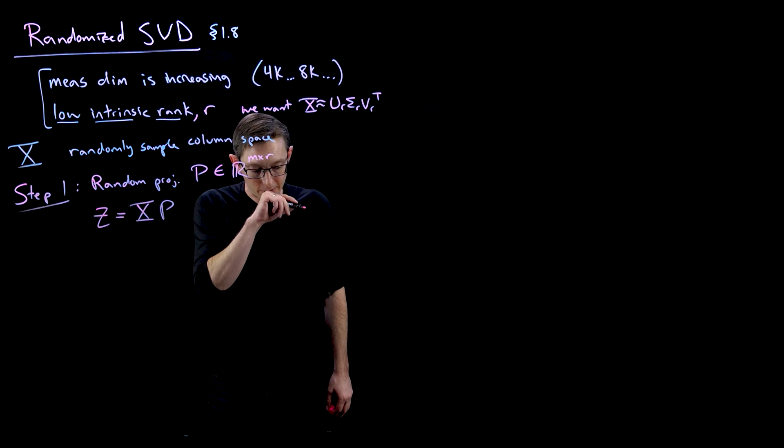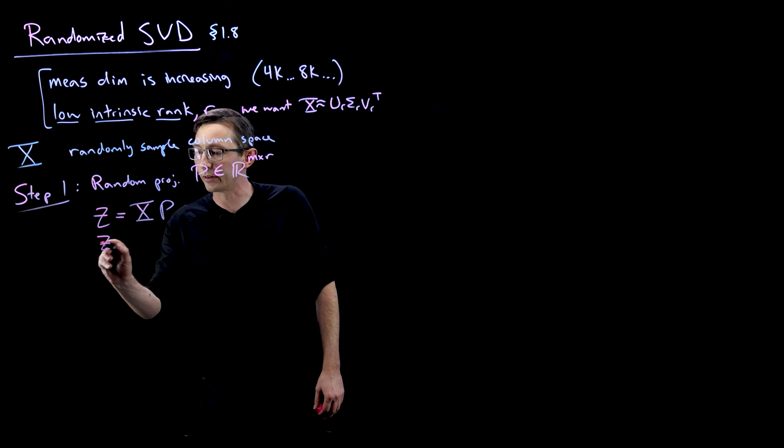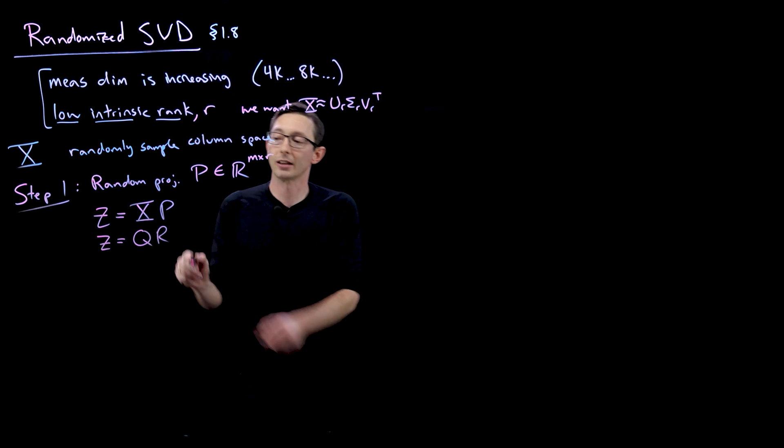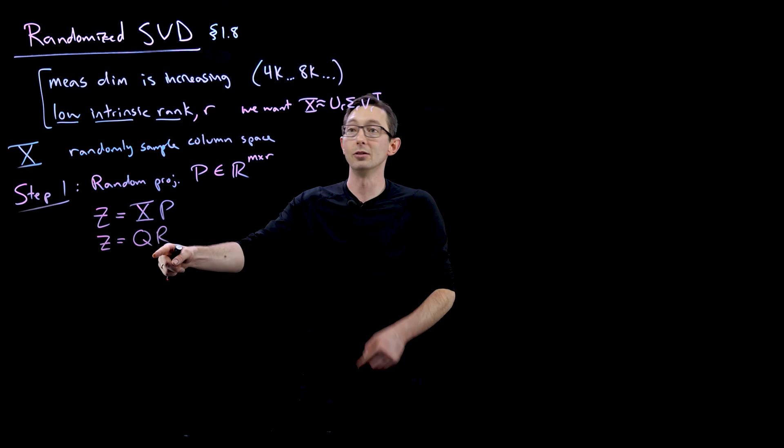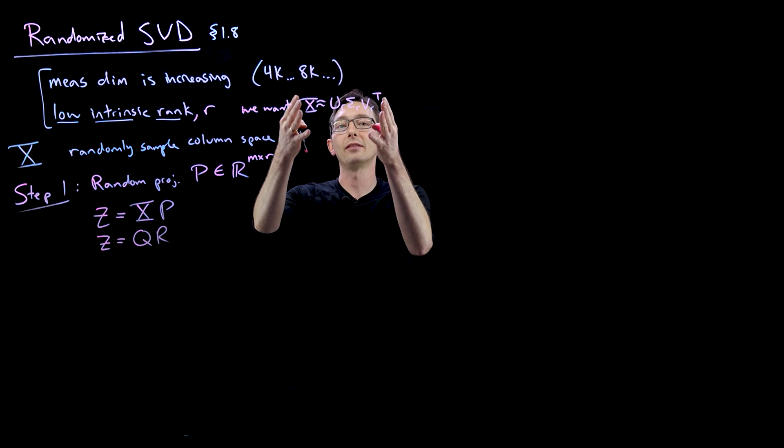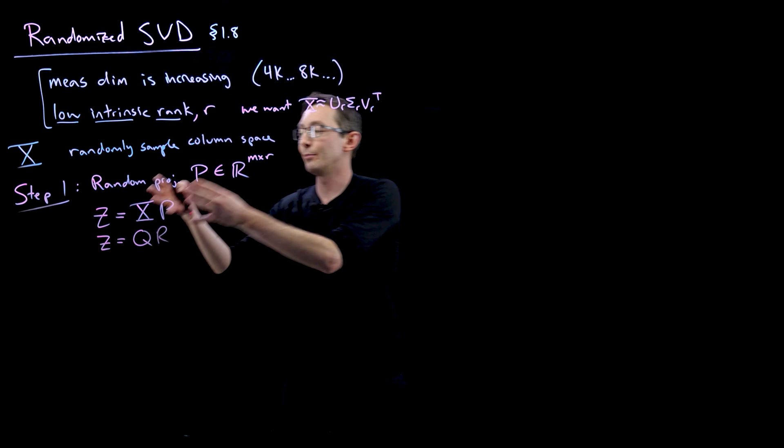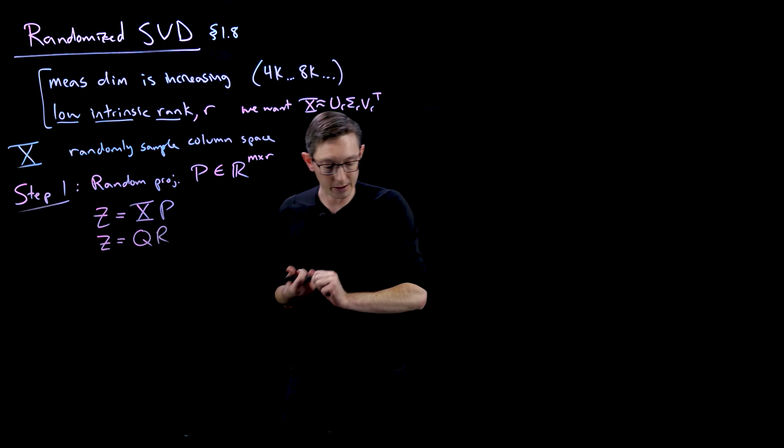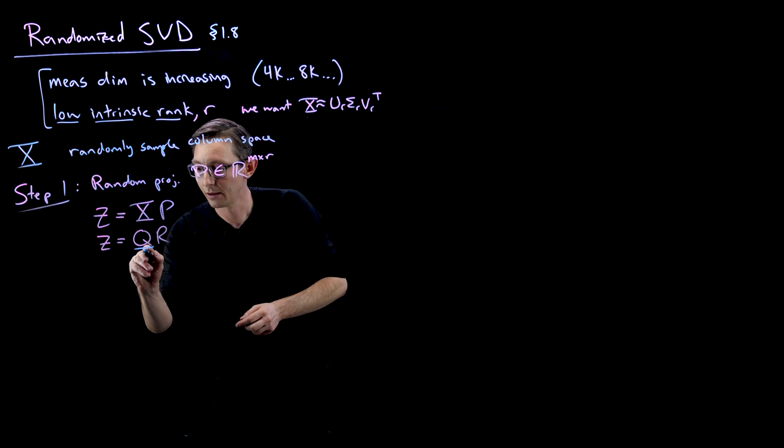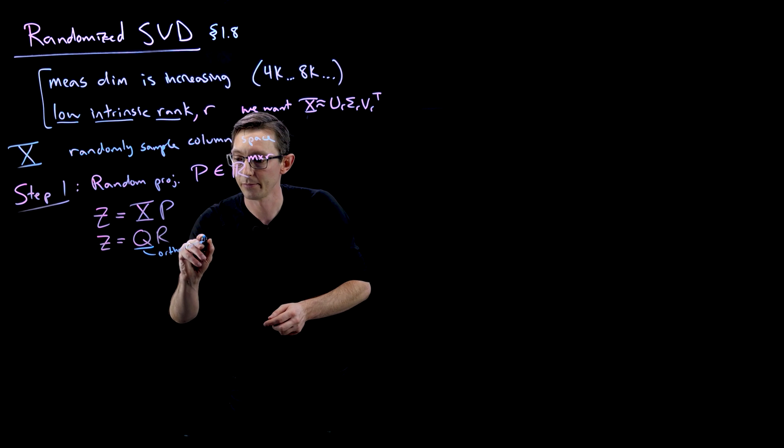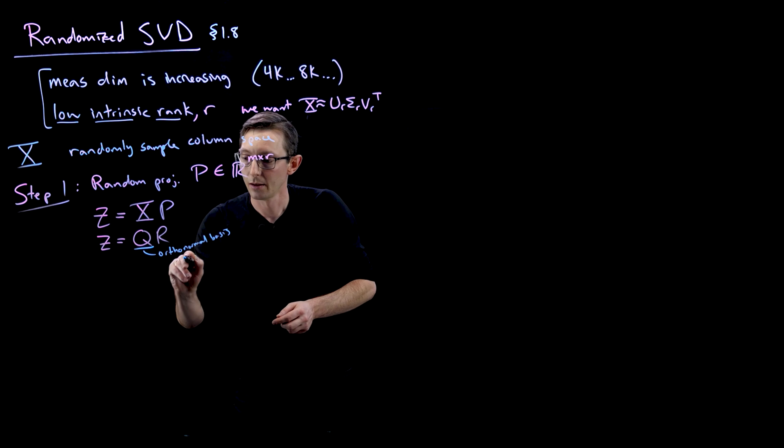And then what we're going to do is we're going to compute the QR factorization, which is pretty efficient. In fact, the QR factorization is what we use to normally compute the SVD of X in the first place. But now instead of computing it on X, we're going to compute it on Z.